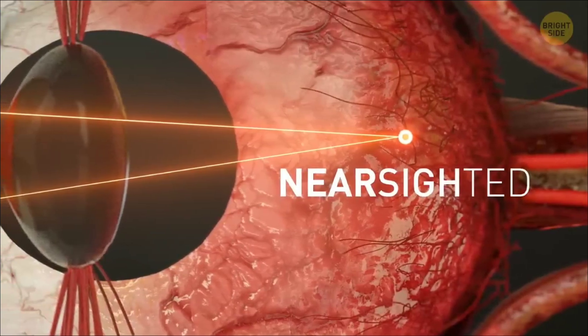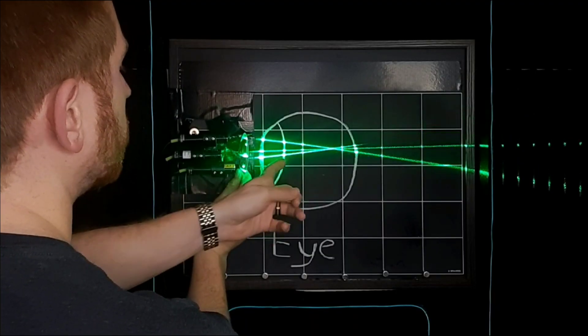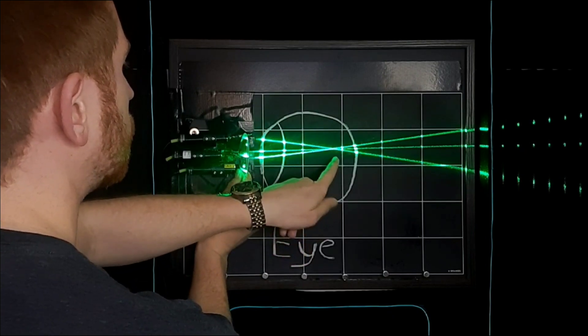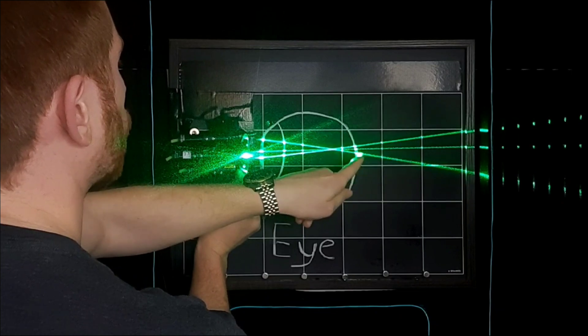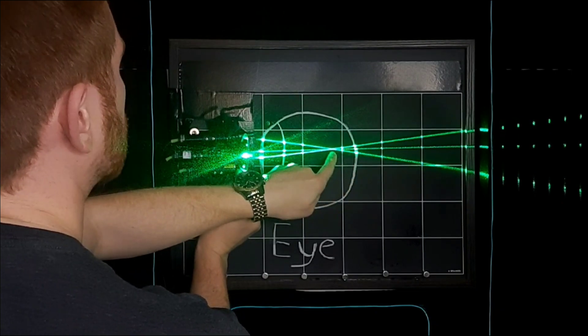So if you're nearsighted, it's bending the light too sharply, too strongly, so it's coming to a point of focus inside of the eye. So once that light reaches your retina, instead of it being focused to a nice point, it spreads out and that becomes blurry.